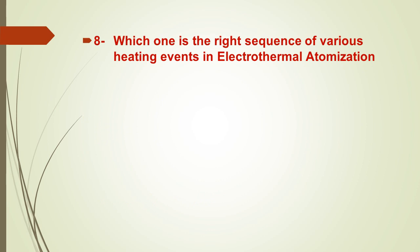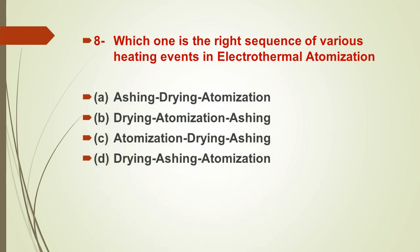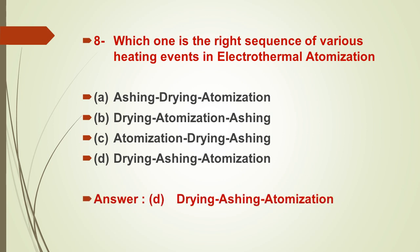Question number eight: what is the correct sequence of heating events in electrothermal atomizers? Options: A) ashing → drying → atomization, B) drying → atomization → ashing, C) atomization → drying → ashing, D) drying → ashing → atomization. The right answer is D — the correct sequence is first drying, then ashing, and finally atomization.